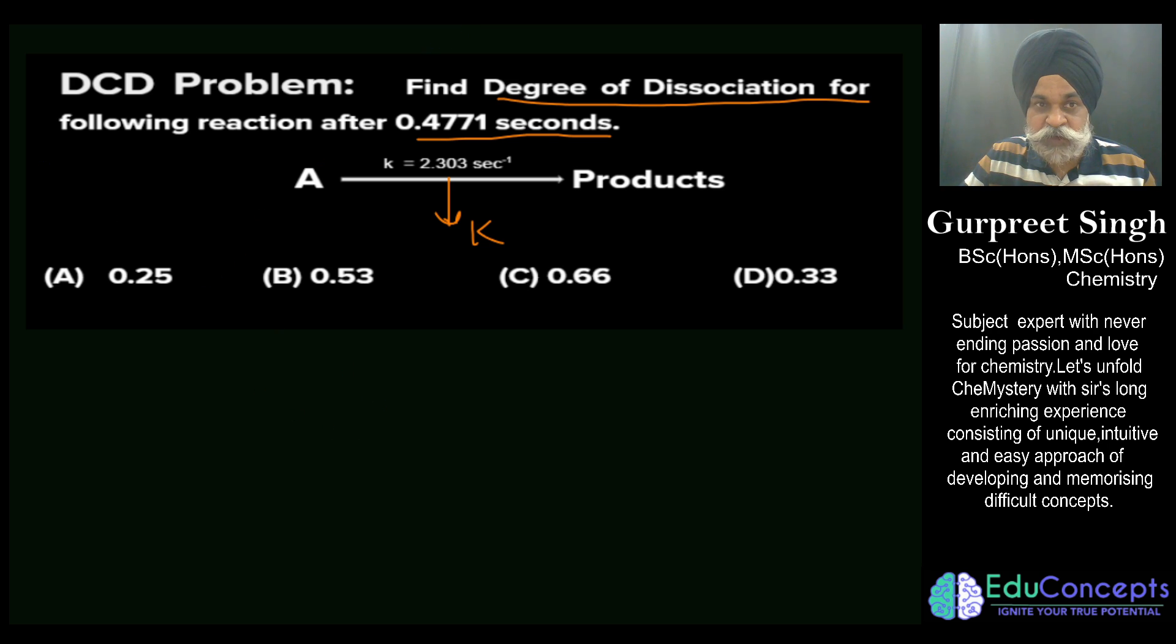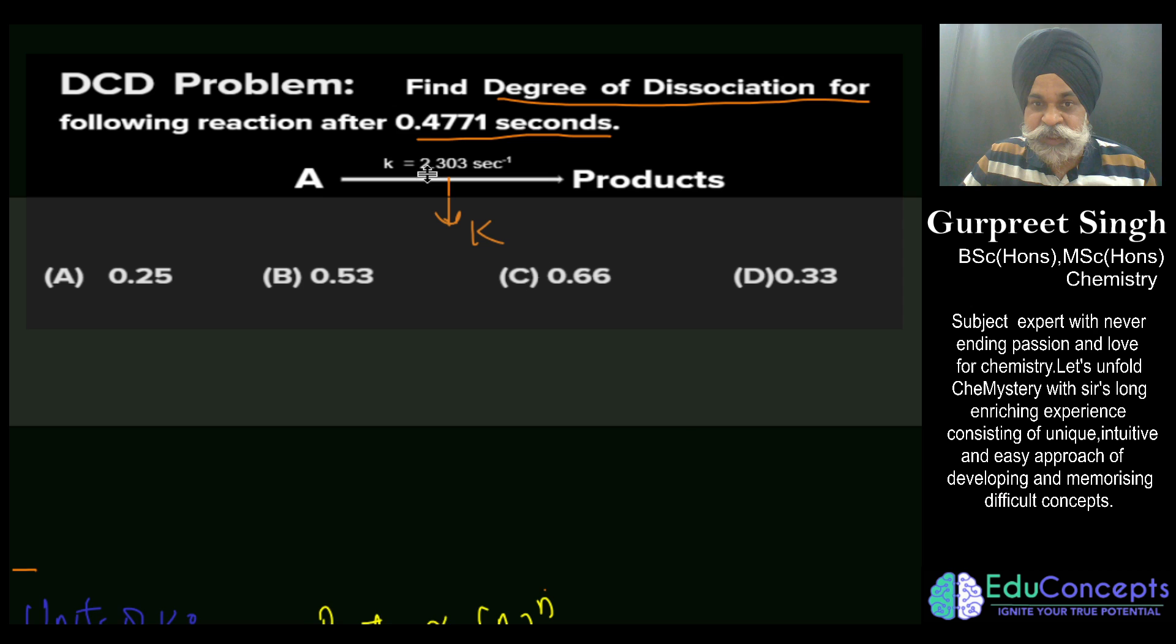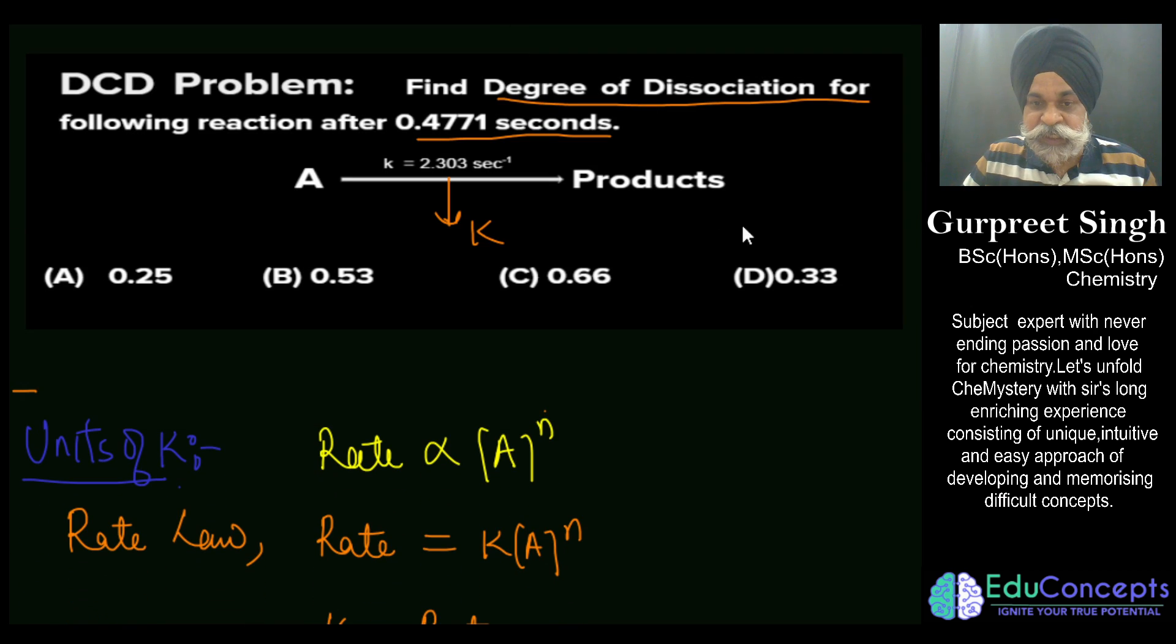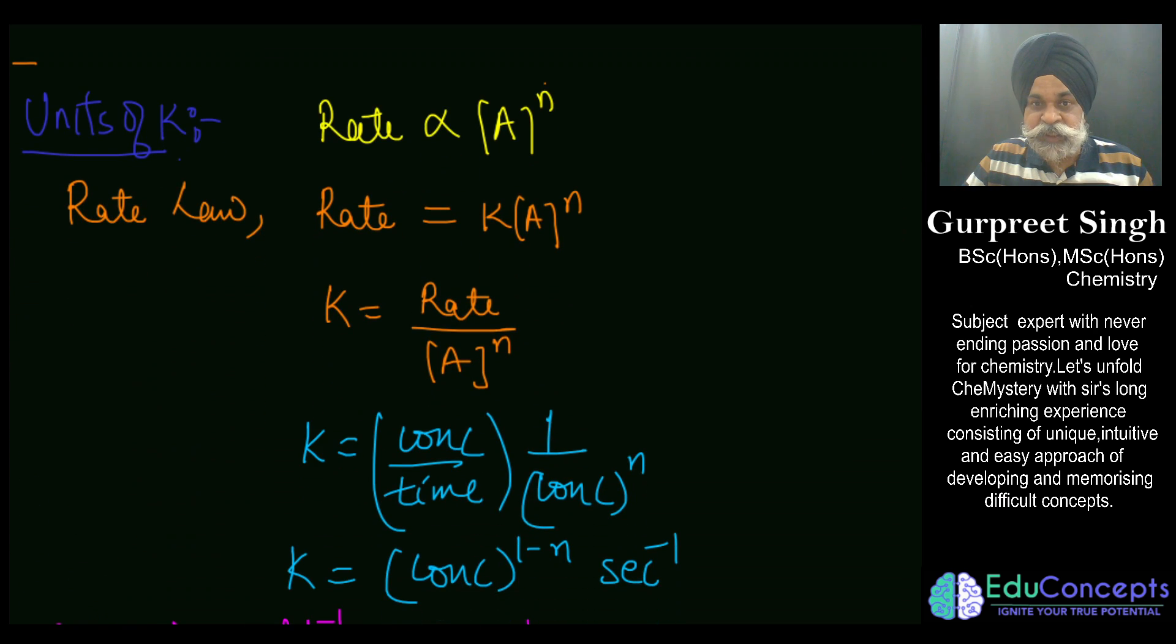So how do we get that? We can simply say it like this: that the rate of reaction is directly proportional to concentration to the power n, where n is the order of reaction which is experimentally found. And to remove this proportionality sign it is to be multiplied by k, that is rate constant.